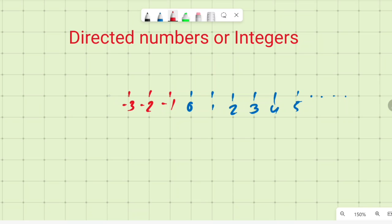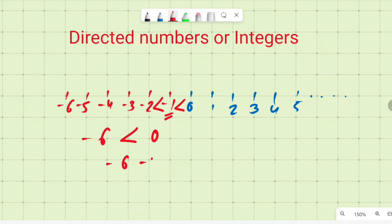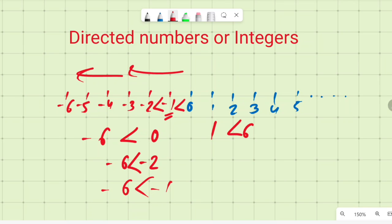The more negative you go, the smaller your number will be. Negative one is smaller than zero, and negative two is smaller than negative one. The more left you go on the number line, the smaller the value. So negative six is smaller than zero, and negative six is also smaller than negative two — it's the opposite of what you'd expect with positive numbers.